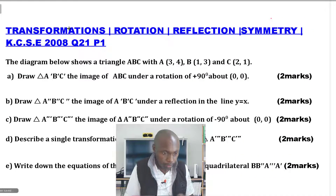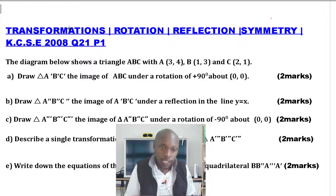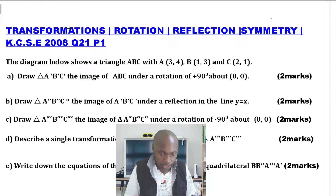The second question, part B: draw triangle A double prime, B double prime, C double prime — the image of A prime, B prime, C prime under a reflection in the line y equals x.